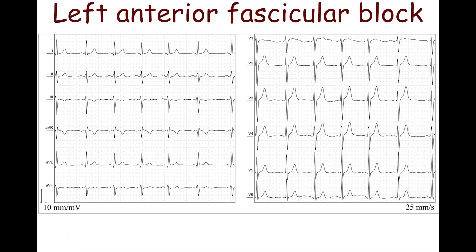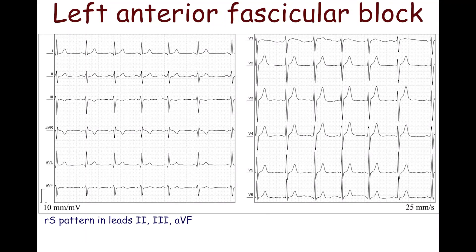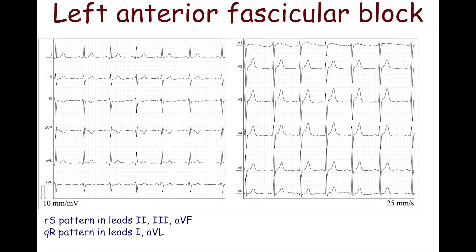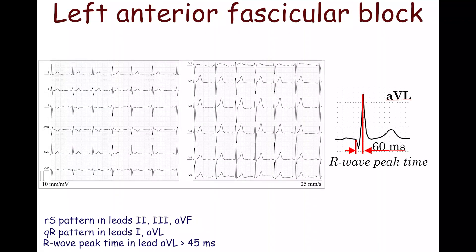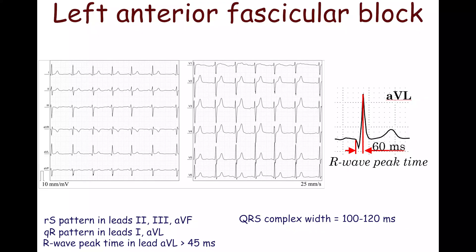The left anterior fascicular block causes prolongation of the QRS complex by approximately 20 ms compared to normal conduction. In most patients with left anterior fascicular block, the QRS complex width ranges from 100 to 120 ms, but this doesn't significantly affect cardiac output. This ECG shows an RS pattern in leads II, III, and AVF; a QR pattern in leads I and AVL; and R-wave peak time in lead AVL of 60 ms. There is a QRS complex width of 110 ms and left axis deviation.